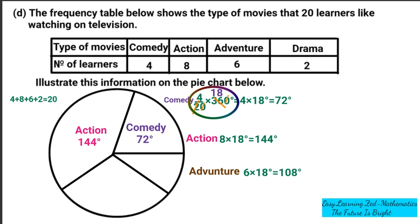The remaining space on the pie chart will be for drama. Even before calculating, if you've cut correctly, that remaining portion will measure 36 degrees. Drama has 2 learners: 2 multiplied by 18 gives 36 degrees. So drama is 36 degrees — and that is the correct answer.